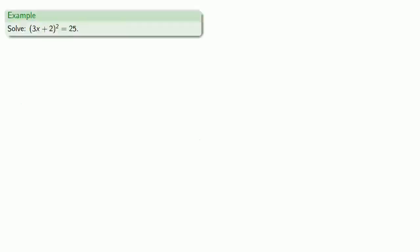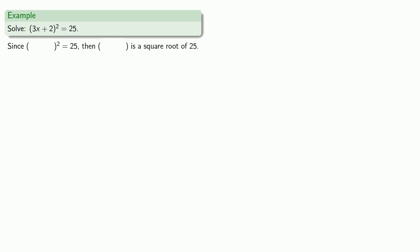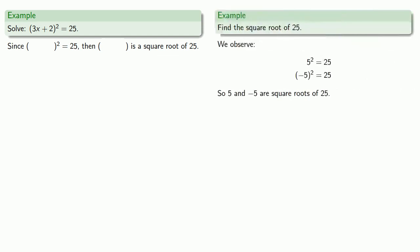For example, suppose we want to solve 3x plus two, quantity squared, equals 25. Since we have something squared equals 25, if we ignore the things inside the parentheses, we have something squared equals 25. It follows that our something is a square root of 25. We already know the square roots of 25 are 5 and negative 5, so our something equals either 5 or negative 5.